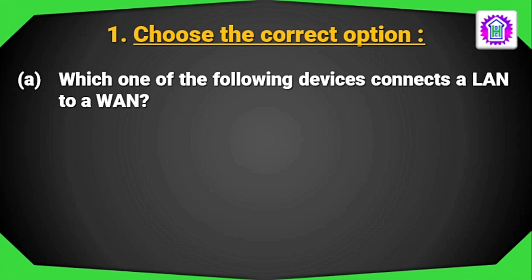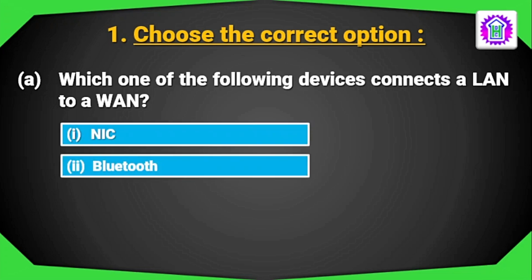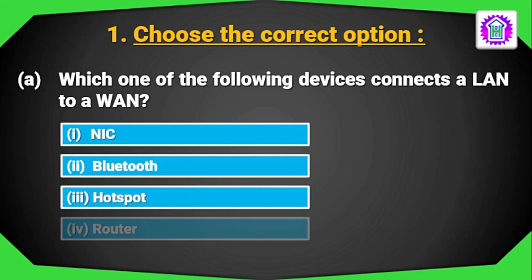Which one of the following devices connects a LAN to a WAN? The options are NIC, Bluetooth, hotspot and router. So when we are connecting a LAN to a WAN, suppose internet, we need a router. So the answer will be router.